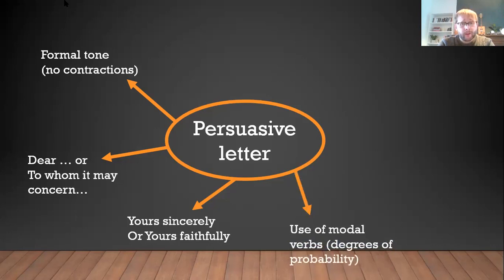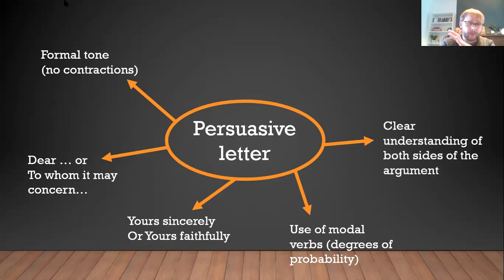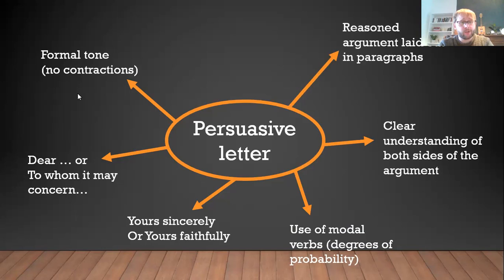It should use modal verbs. Those are the words that show a degree of probability. It should contain a really clear understanding of both sides of the argument. So you shouldn't just be using one side of your argument to be persuasive. You should show that you understand both sides of a debate or both sides of a discussion. It should be a well-reasoned argument and it should therefore be laid out in clear paragraphs. And then finally, it should be using the subjunctive form.